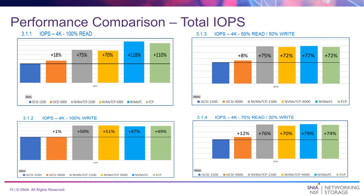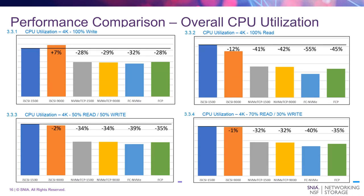That's for IOPS. The white paper also has latency information. Another important comparison is overall CPU utilization — again using iSCSI at 1500 MTU as the baseline. For the 100% write case, iSCSI at MTU 9K actually used slightly more CPU, while NVMe-TCP and Fiber Channel cases are very close — the best being FC NVMe. Similar patterns apply for 100% read, 50/50, and 70/30 mixes. The purpose isn't exhaustive detail but to give you a sense of how the three transports relate to one another.